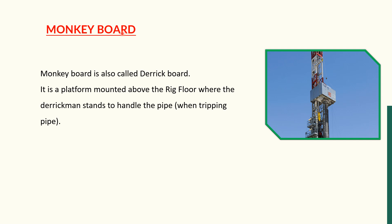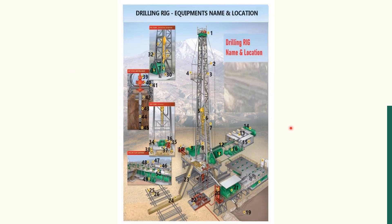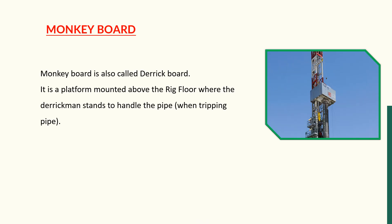The next equipment is the monkey board. Looking at this image of a rig, you can see the elevated platform inside the derrick — that is where the monkey board is located. The monkey board is also called the derrick board. It is a platform mounted above the rig floor where the derrickman stands to handle the pipe when tripping.